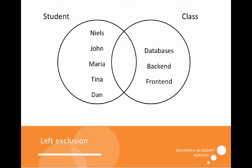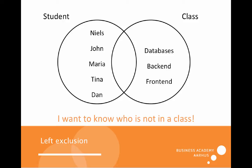So we want to look first at the left exclusion. That means I want to know who is not in a class — those students who are not in a class. I know that Dan is not in a class. Since Nils and John are in databases and Maria and Tina are in backend, those are common ground. We would like to use a left outer join and then subtract the shared data, the common ground between those two tables.